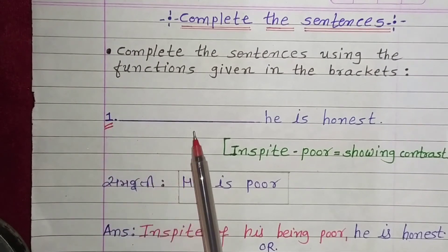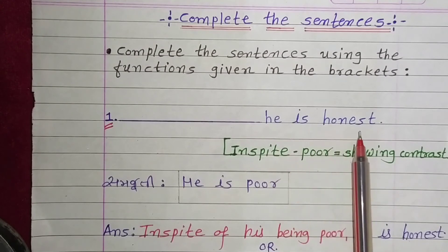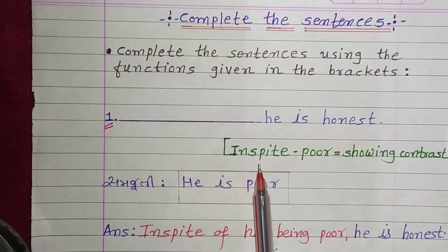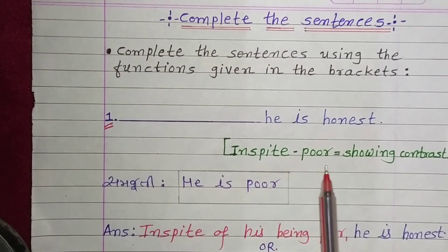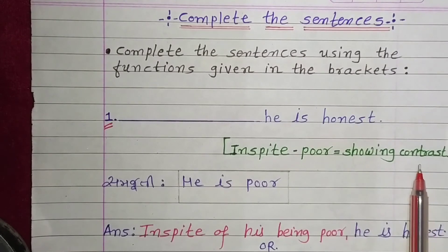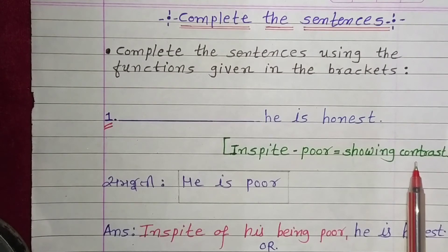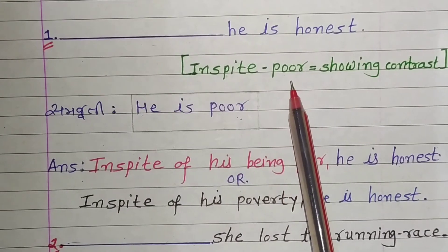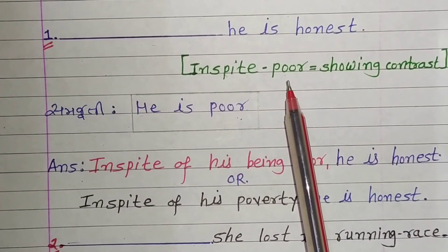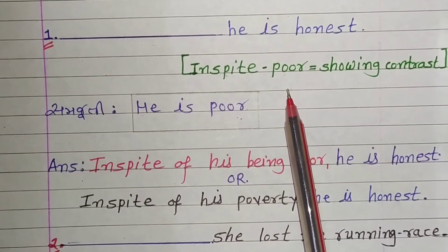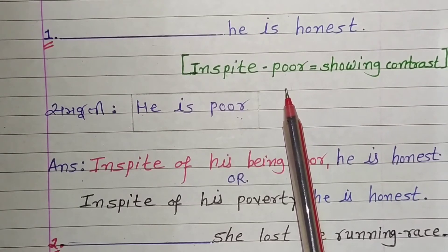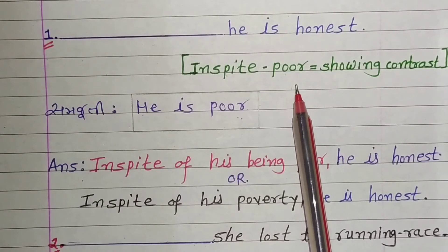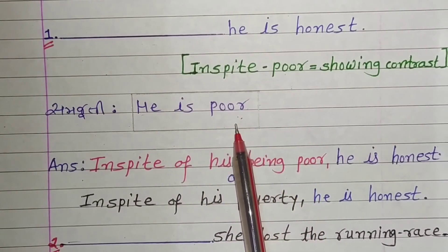Example number 1: 'He is honest.' Bracket: in spite of, poor, so in contrast. 'Poor' means 'ghareeb' (poor). Now making the Gujarati answer: 'He is poor, yet he is honest.' The English for 'he is poor' is 'He is poor.' Dear students, the explanation given here is for understanding — in the exam you write the direct answer only.